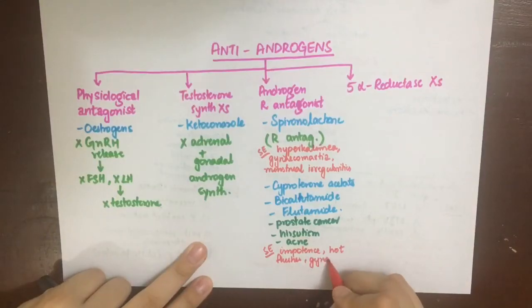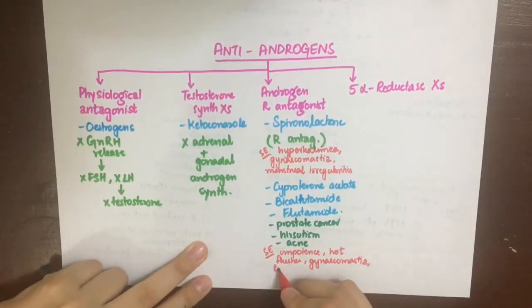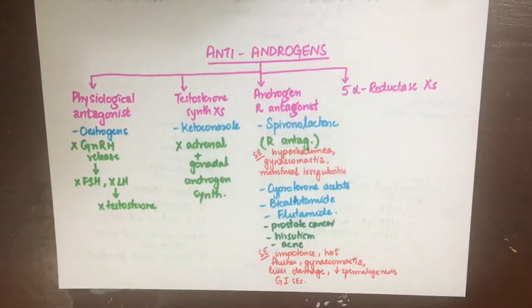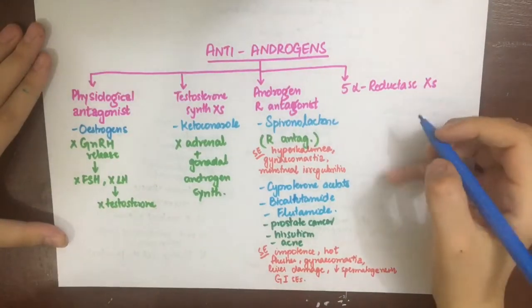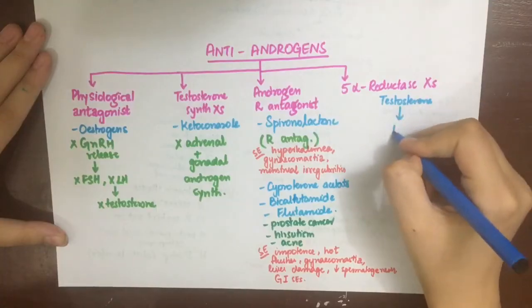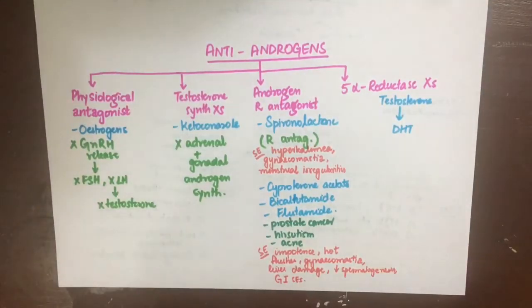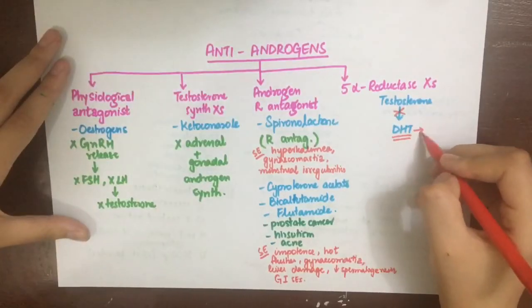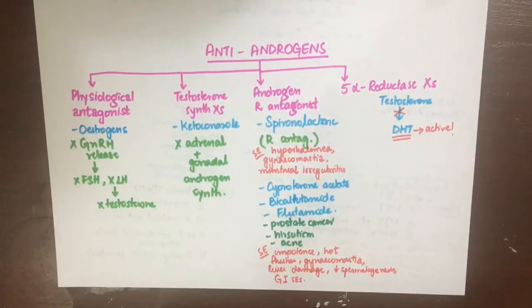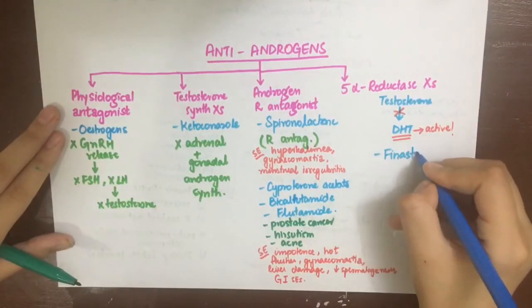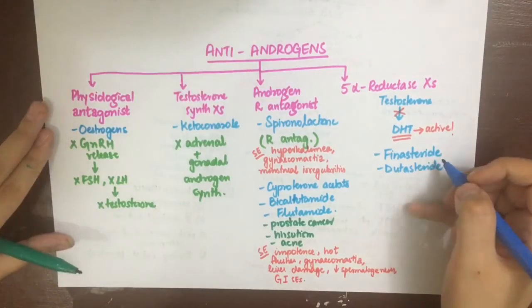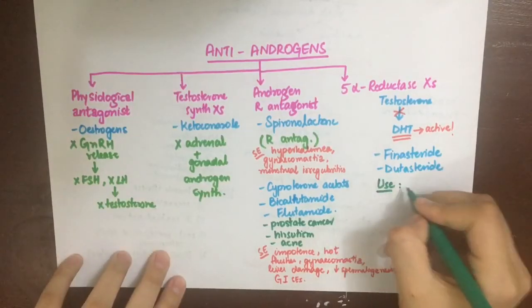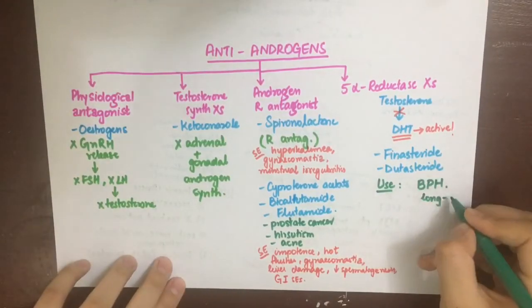Lastly, 5-alpha reductase inhibitors inhibit the conversion of testosterone into dihydrotestosterone, which is the active form with many functions. They are mainly used in BPH (benign prostatic hyperplasia), and therapy should be long-term because if discontinued the hyperplasia will return. In combination with alpha-1 blockers, their efficacy is even increased. The major drugs are finasteride and dutasteride, with dutasteride being long-acting.